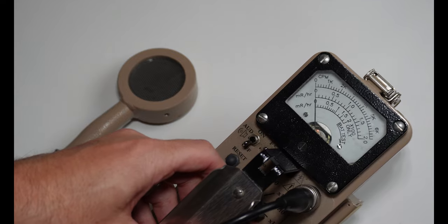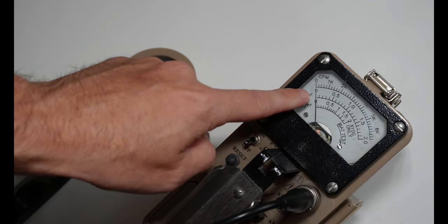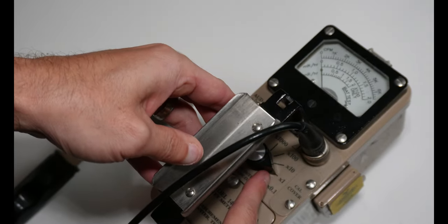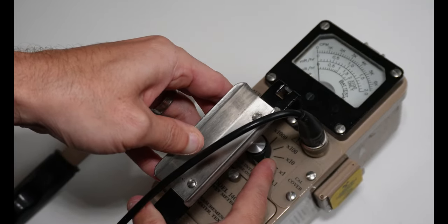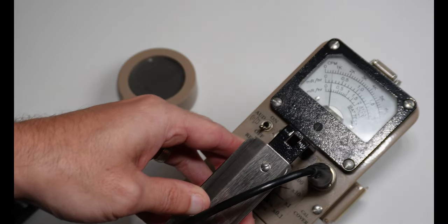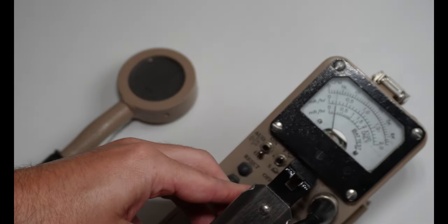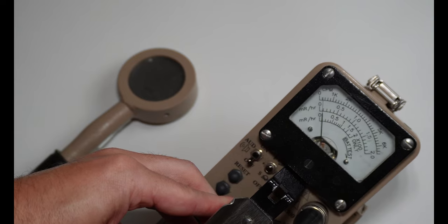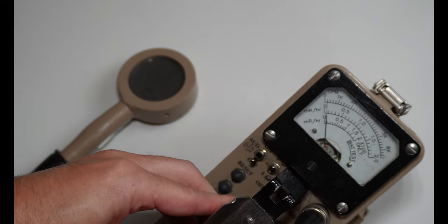So sometimes on your survey meter, you'll notice that there's no deflection of the needle at all. And that's because you would be set on too high of a scale. So if you flip it down to the lowest scale, we'll start to see needle deflection. And so there we have the needle deflecting, showing us that the survey meter is actually turned on.